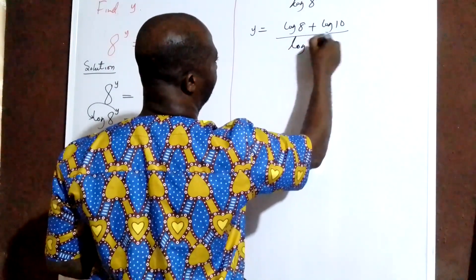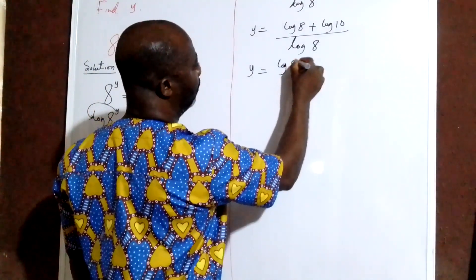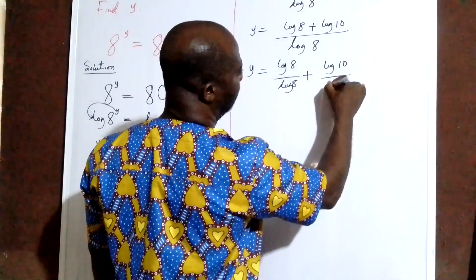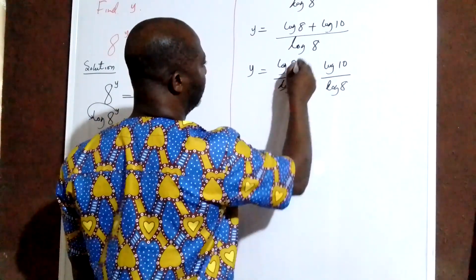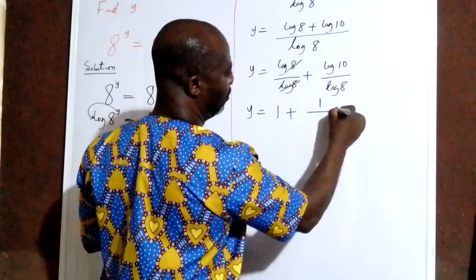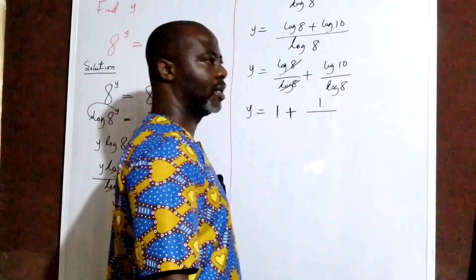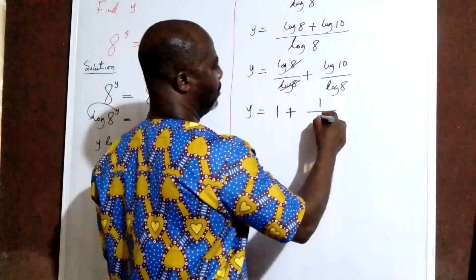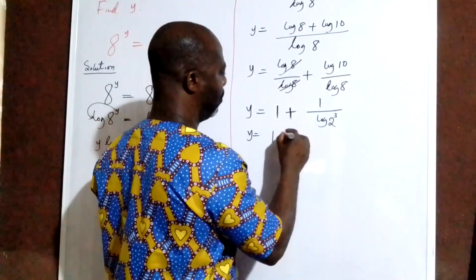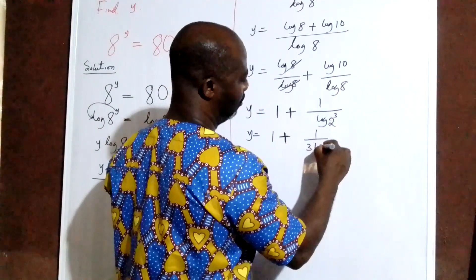Then we have log 8 in the denominator. So I split this as y equal to log 8 over log 8 plus log 10 over log 8. Log 8 and log 8 cancel out, so we have 1 plus log 10 over log 8, and log 10 is 1. Then log 8 is the same thing as log 2 raised to the power 3, so I am going to have 1 plus 1 over 3 log 2.